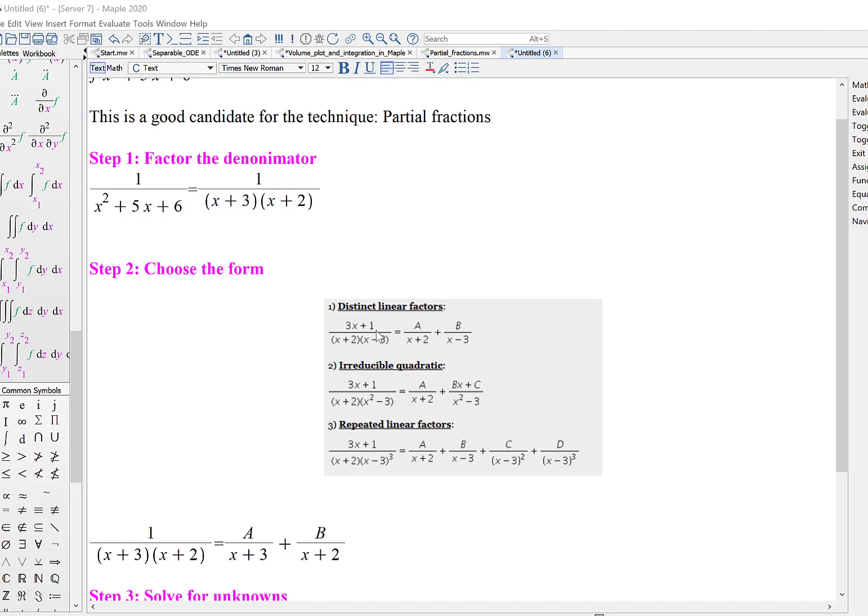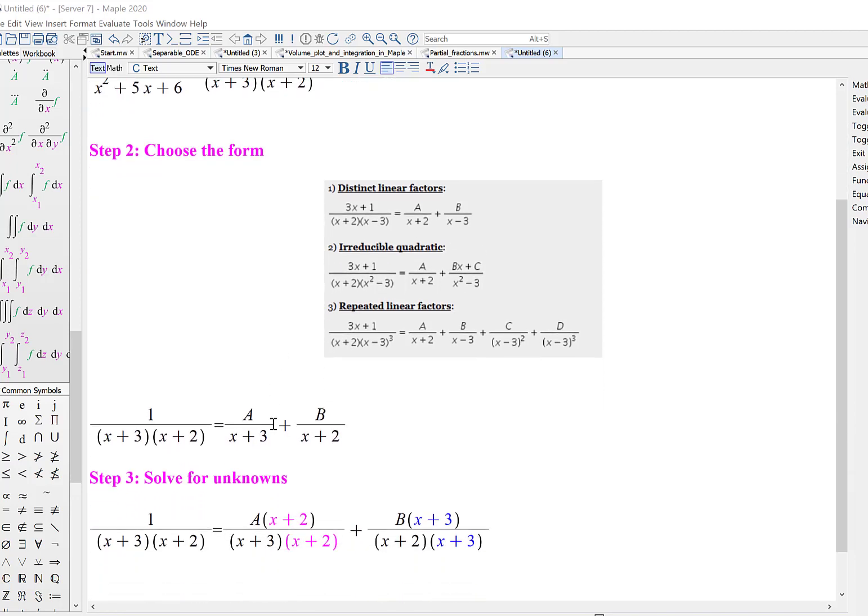For our problem here, we do have distinct factors because they're different. And they're linear because we don't have any x squared or x cubed terms down here in the denominator. So we've got distinct linear factors. I'm going to set up my form as A over x plus 3 plus B over x plus 2.